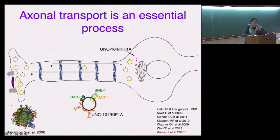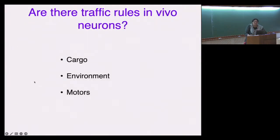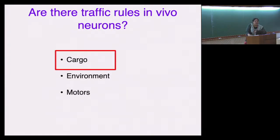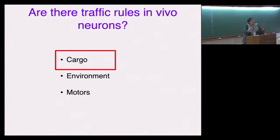A very simple question when you look at all of this: precursors are made in the cell body, they move, they go to the synapse — are there traffic rules in vivo in neurons? The answer comes in three parts. First, cargo: as a neurobiologist, we are more interested in cargo because cargo is what executes neuronal function. We will start with cargo, move to the environment in which vesicles move, and finally cover motor.